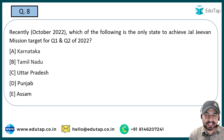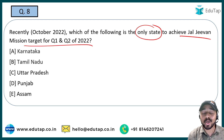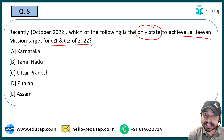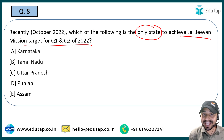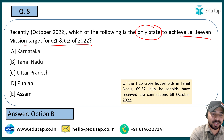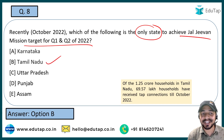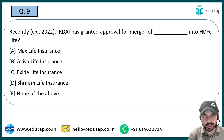The next question: which of the following is the only state to achieve the Jal Jeevan Mission target for Quarter 1 and Quarter 2 of 2022? NABARD Grade A aspirants should note this question. The right answer is Option B — Tamil Nadu, which is the only state that has achieved Jal Jeevan Mission targets for Quarter 1 and Quarter 2 of fiscal year 2022.